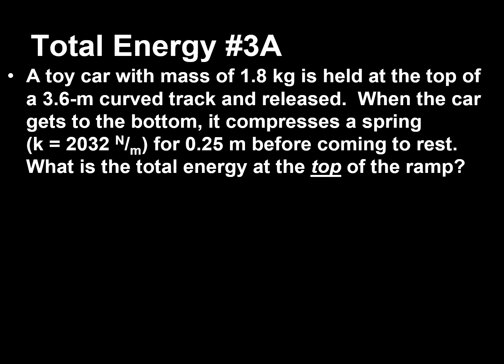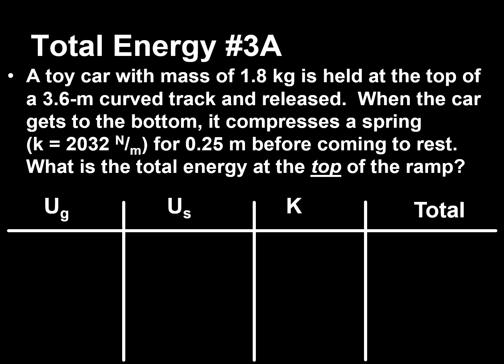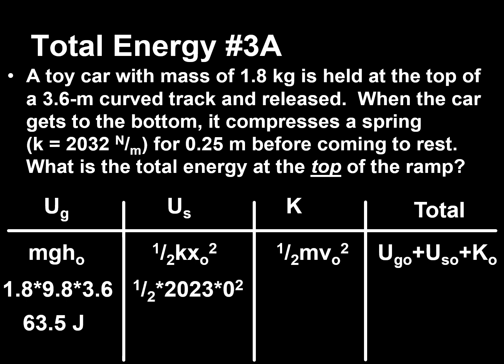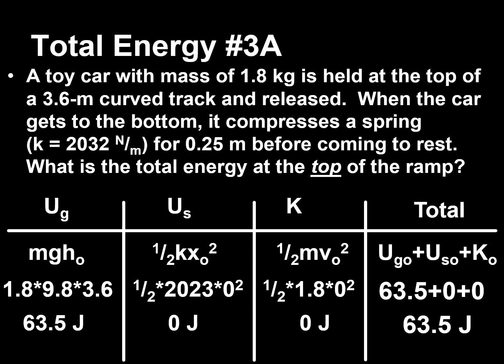A toy car (1.8 kg) is held at the top of a 3.6-meter curved track and released; it compresses a spring with k = 2,032 N/m by 0.25 meters before coming to rest. At the top: gravitational potential energy = 1.8 × 9.8 × 3.6 = 63.5 joules. Spring potential energy = 0 (not compressed). Kinetic energy = 0 (held at rest). Total energy at the top = 63.5 joules.